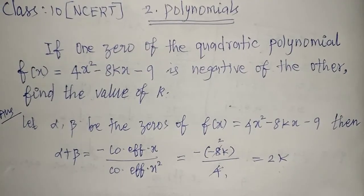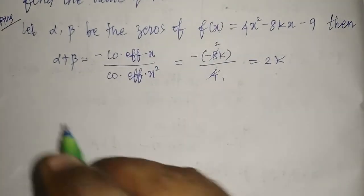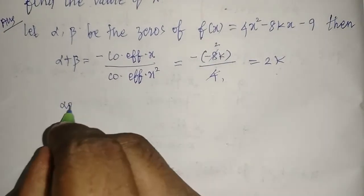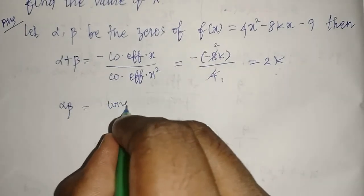This is the sum of the zeros. Now we have to find the product of zeros. So alpha into beta, the product of zero, is equal to constant term divided by coefficient of x square.